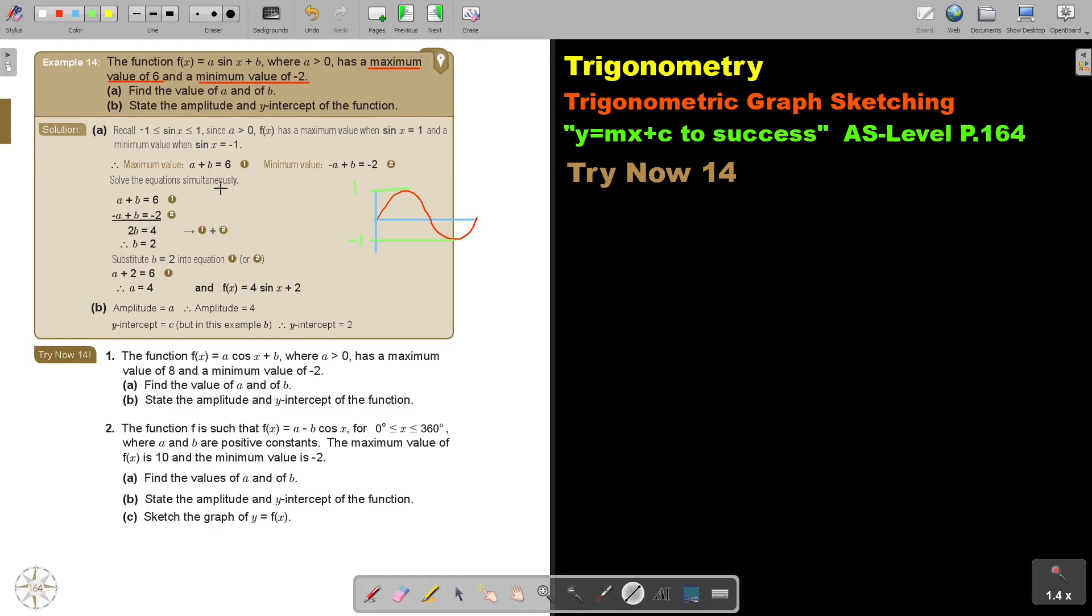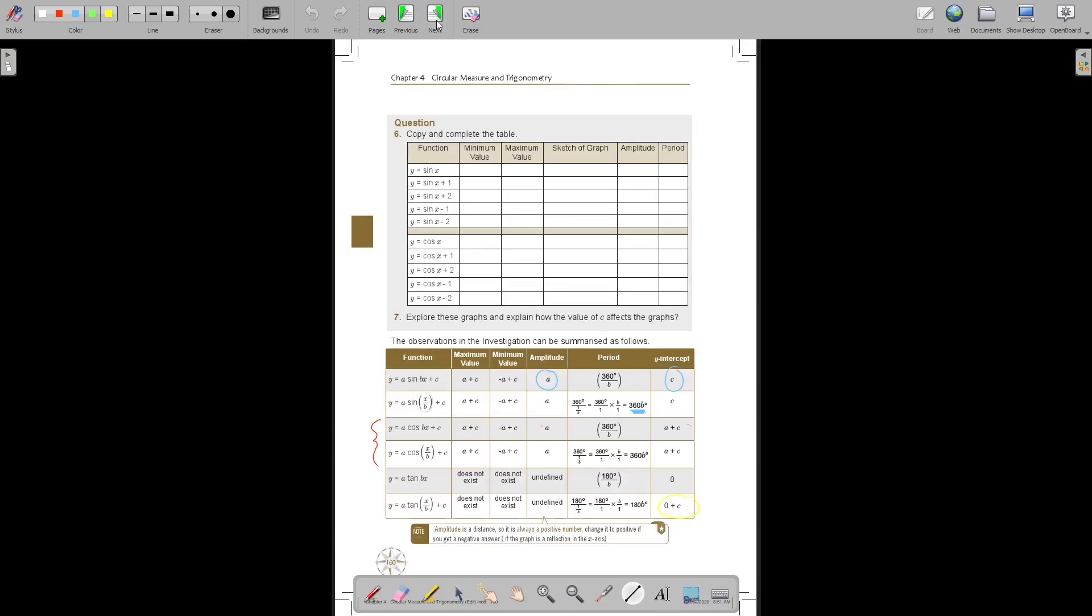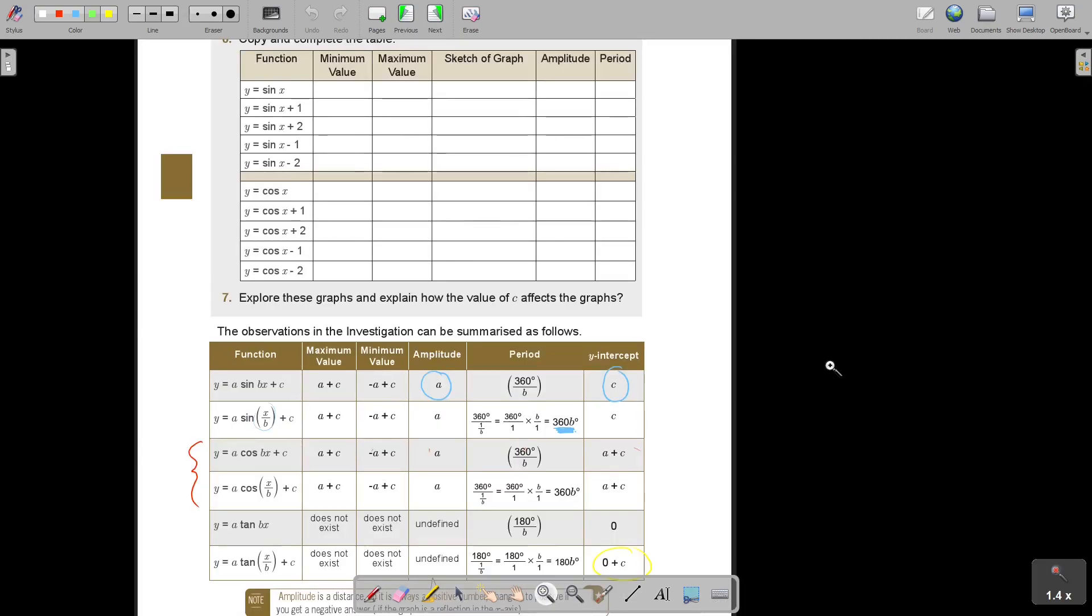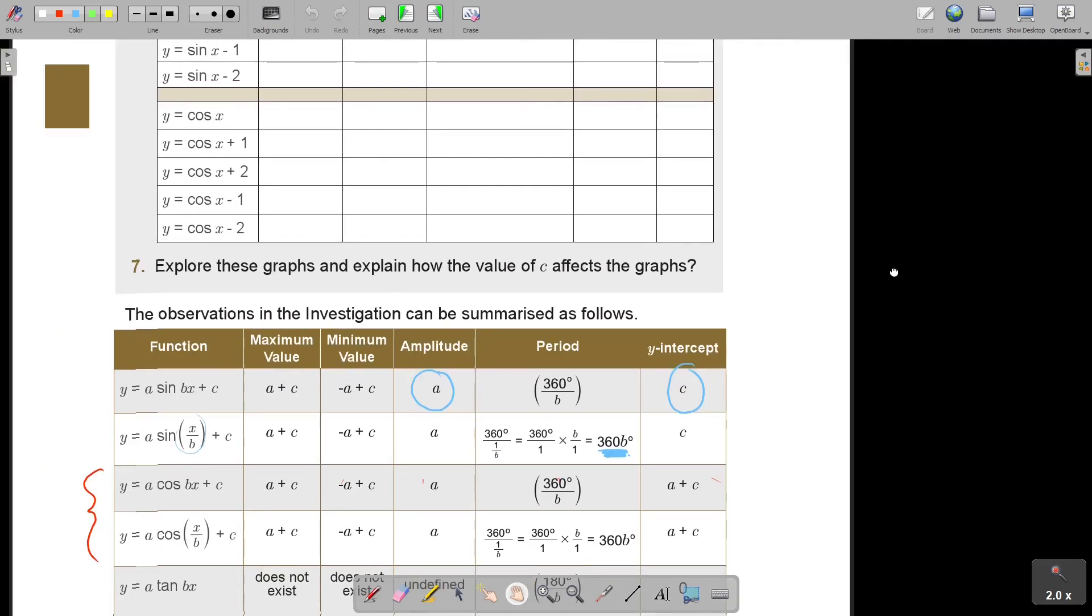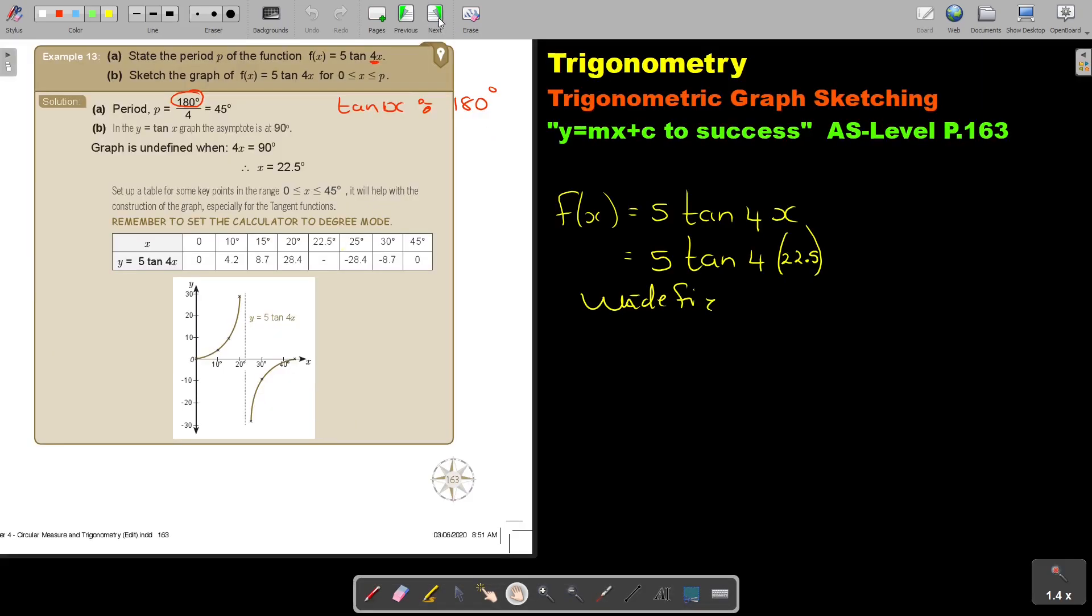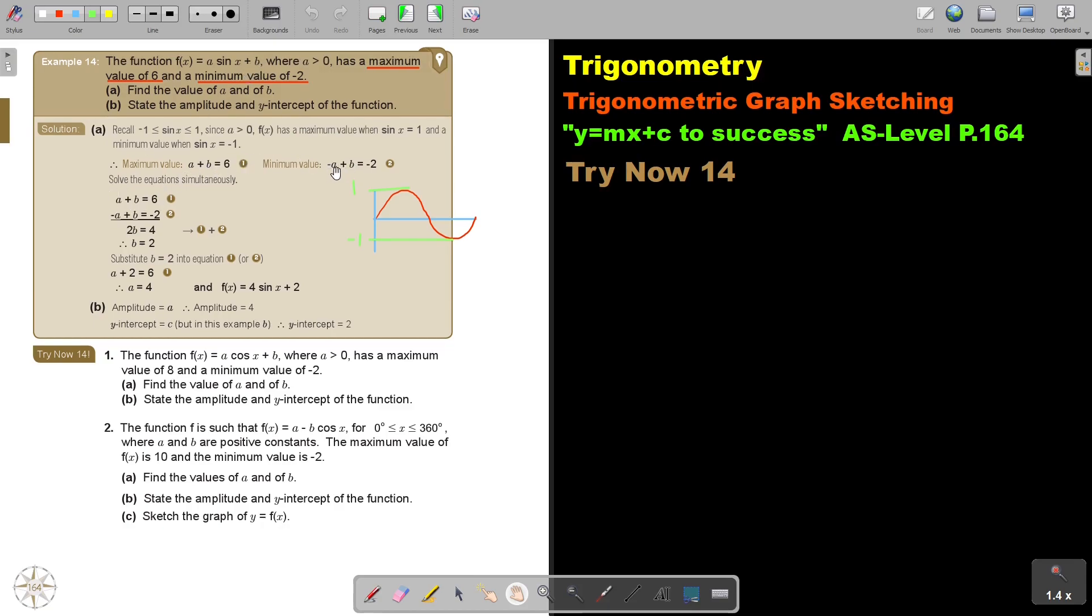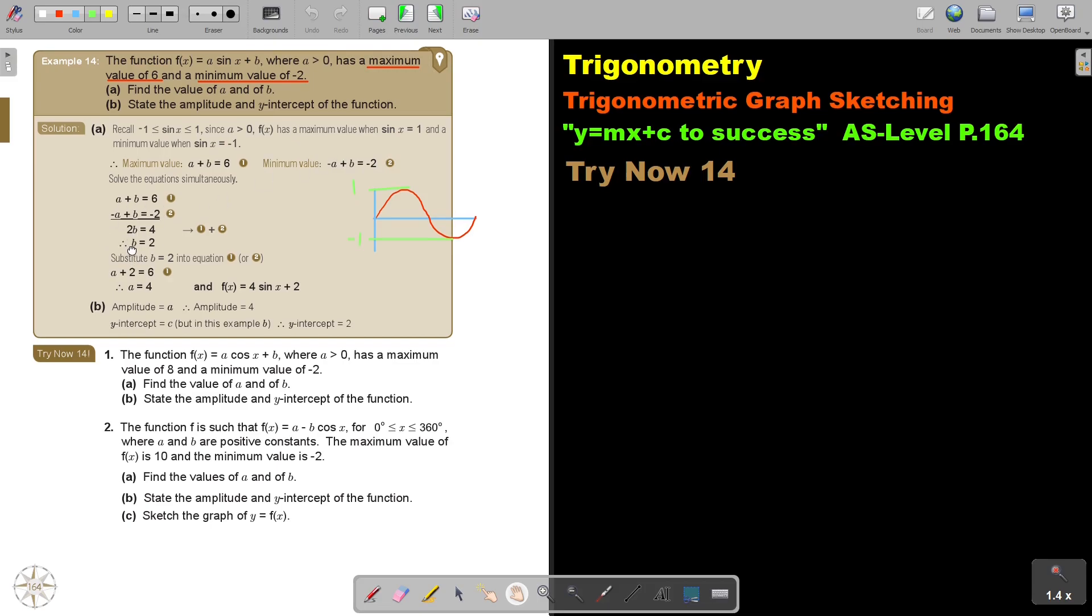I just want to take you back to this table here. Okay we are with a sin one. Can you remember the maximum value is a plus, meaning the one in front of a plus the constant. In this case it's just b. So a plus c and the minimum value is negative a plus c. This table will help you. So it's a plus b but because this is now not called c, it's called b. So a plus b is 6 and negative a plus b is negative 2. Solve it simultaneously and you get that b is equal to 2 and then you substitute and you get a is equal to 4.